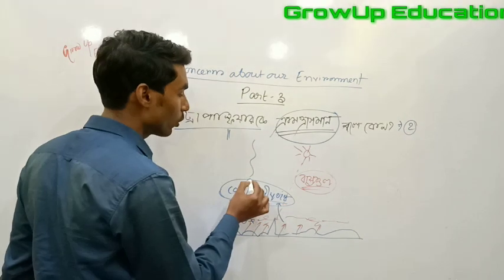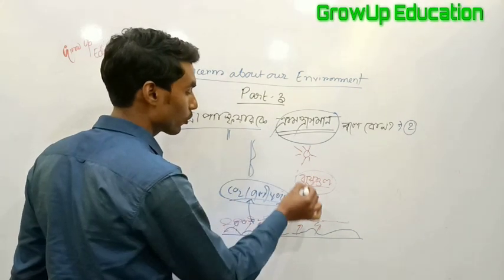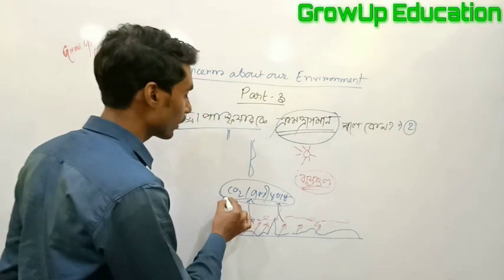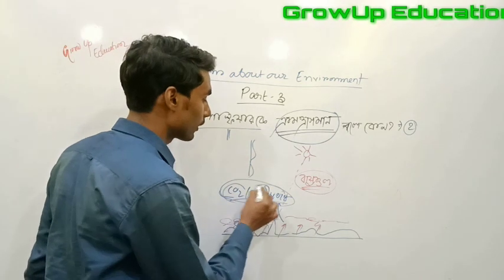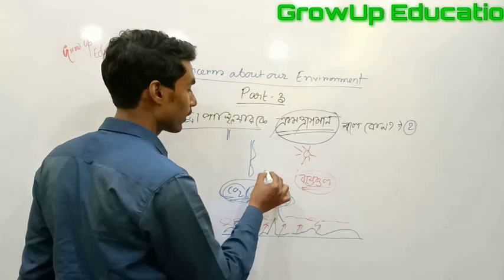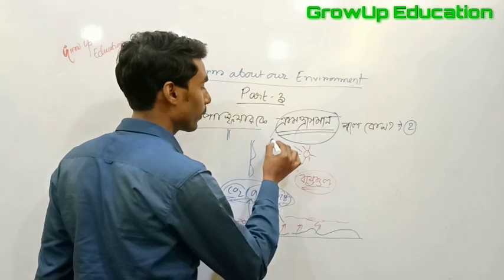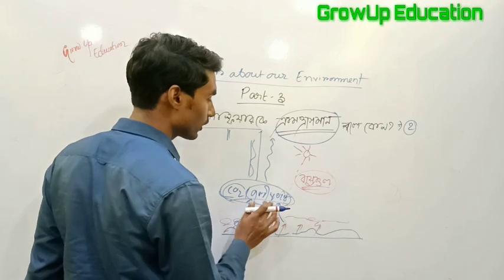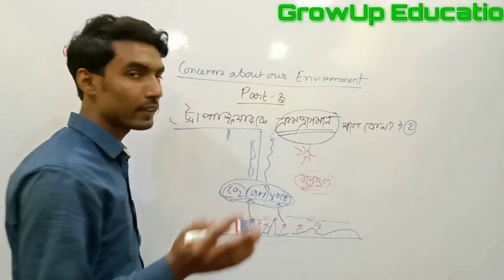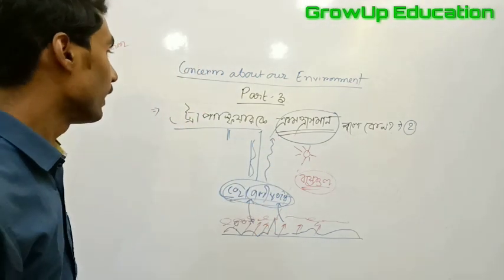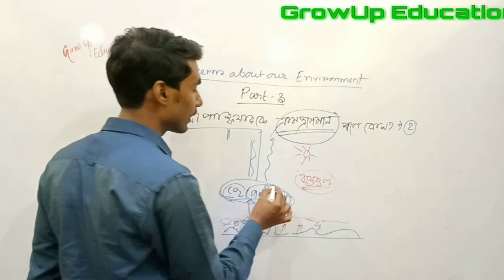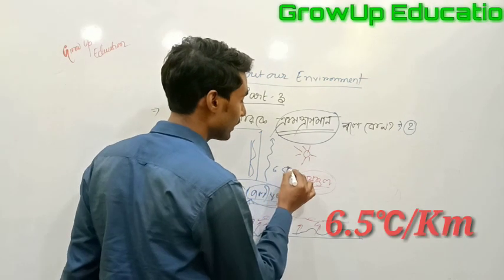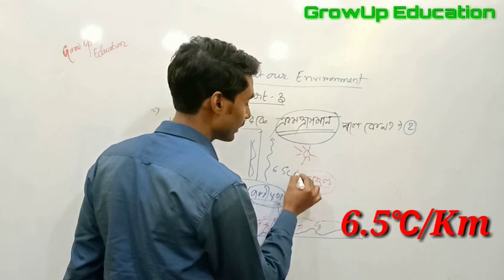What happens is that the temperature is automatically absorbed by the surface. The temperature lapse rate is 6.5 degrees Celsius per kilometer.